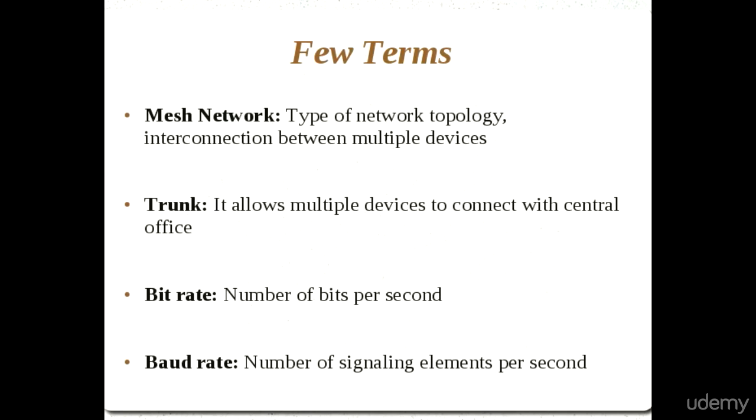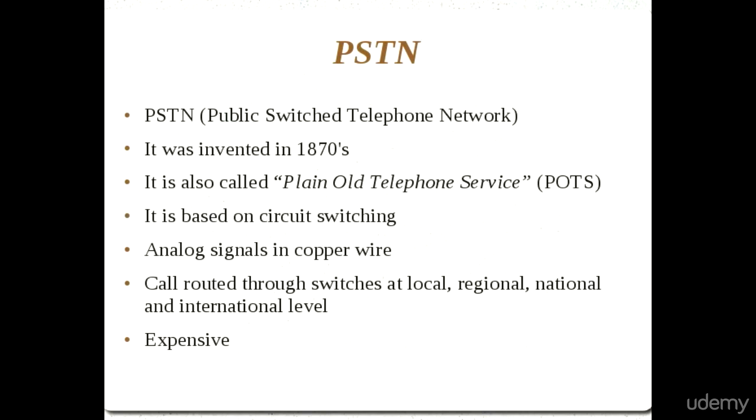Bit rate is the number of bits per second that can be transmitted along a digital network. Baud rate is the data transmission rate, measured in signals per second. There is a difference between bit rate and baud rate: bit rate is the number of bits transmitted per second, while baud rate is the number of signaling elements — essentially the frequency — sent per second.